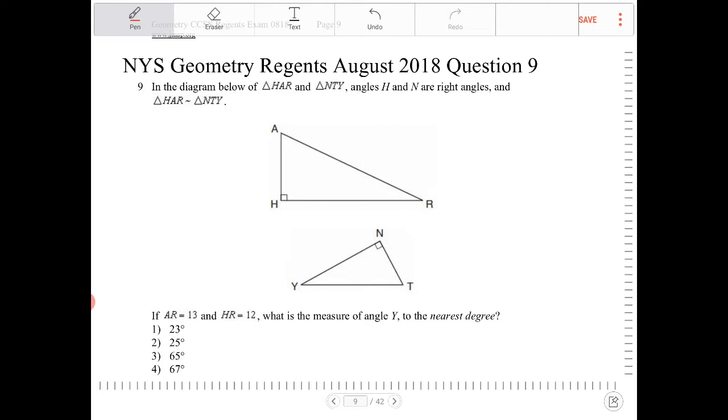If AR is equal to 13 and HR is equal to 12, what is the measure of angle Y to the nearest degree? They're asking us to find out what angle Y is, where we're not given any information about triangle NTY, but we're given information about triangle HAR. How are we supposed to be able to figure out the angle measure for a triangle where we're not given any information about?